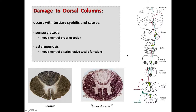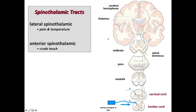The VPL feeds into the cerebral cortex, where sensory information is processed by the postcentral gyrus — Brodmann's areas 3, 2, and 1. Damage to the dorsal columns can occur with syphilis, resulting in sensory ataxia, impaired proprioception, and difficulty discriminating tactile functions. Now the spinothalamic tract — the pain pathway — runs differently. We have sensory inputs from the skin carried by C fibers, which are unmyelinated and carry burning sensation and temperature.